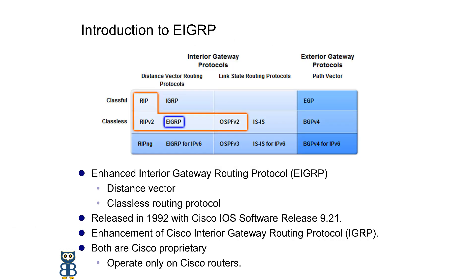EIGRP is an enhanced version of IGRP and was, until recently, a Cisco proprietary routing protocol. EIGRP is a classless protocol, and it provides unequal cost load balancing and rapid convergence. Its secret sauce is the Diffusing Update Algorithm, or DUAL, which identifies network paths and provides fast reconvergence using loop-free backup paths.